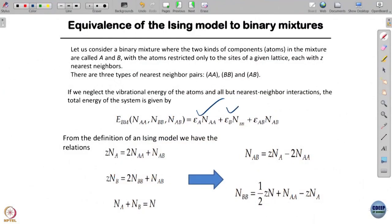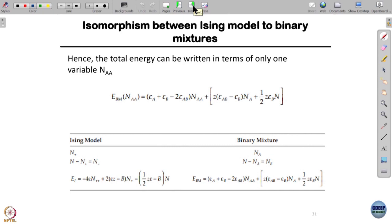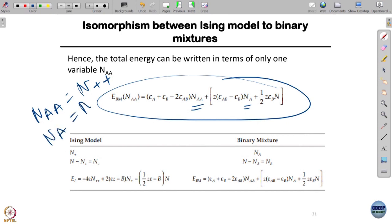Here I do exactly the same thing. I write the binary mixture energy as epsilon AA NAA, epsilon BB NBB, epsilon AB NAB. Just like there I have n++, this is n--, this is n+-. Just like in Ising model we have these three conditions, the five variables become equal to three variables. The total energy can be written by eliminating all other variables keeping NAA and NA. We don't have to do extra work; everything has been done by Bragg and Williams. We just map it into and use the free energy.